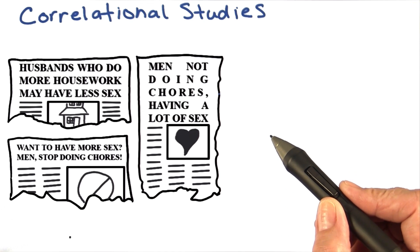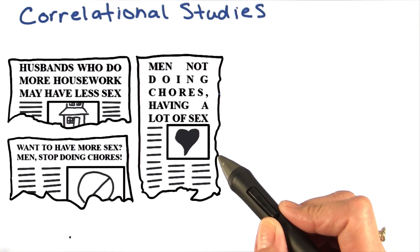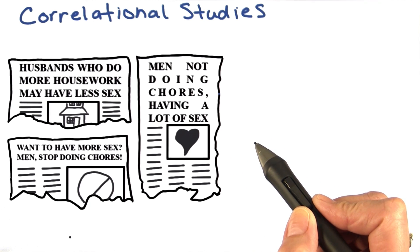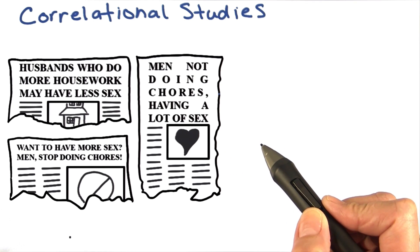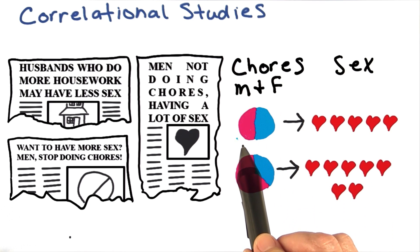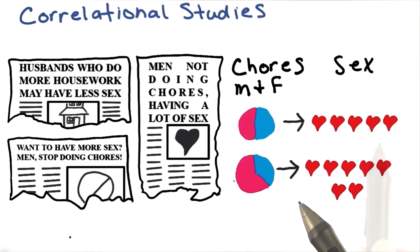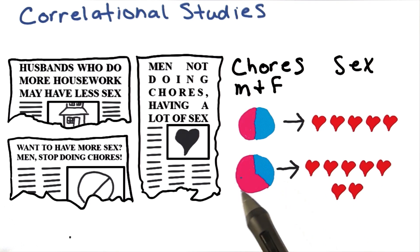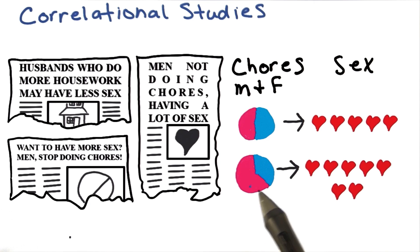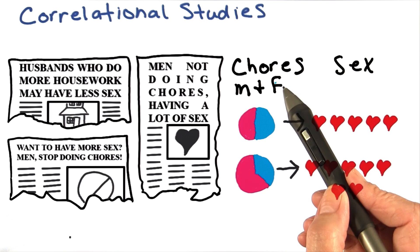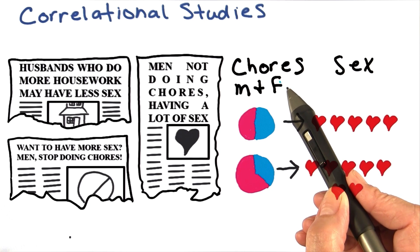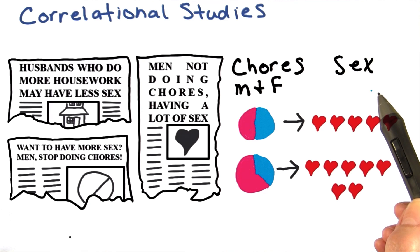These media headlines are based on a correlational study that measured the time and type of chores — masculine versus feminine — and the amount of sexual encounters. In the study, they found that couples who split the type of household chore, masculine versus feminine, reported five sexual encounters per month. However, when men completed approximately 17 hours of masculine-type chores and women completed approximately 35 hours of feminine-type chores, they had nearly two more sexual encounters per month. So the variables here are chores — or types of chores, masculine versus feminine — and sexual encounters.